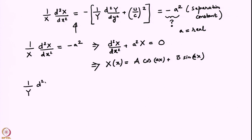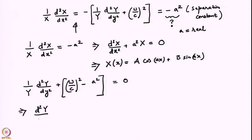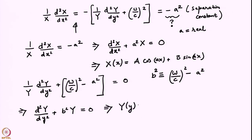For the Y equation: (1/Y)·d²Y/dy² + (ω/c)² − a² = 0. This can be written as d²Y/dy² + b²Y = 0, where b² = (ω/c)² − a². The square is for convenience to avoid carrying square roots. This is also easy to solve: Y(y) = C·cos(by) + D·sin(by).